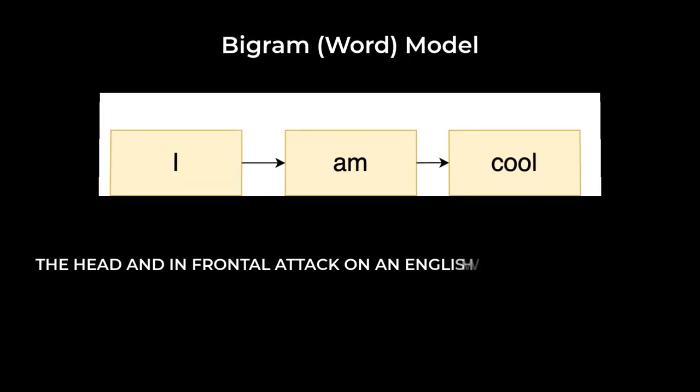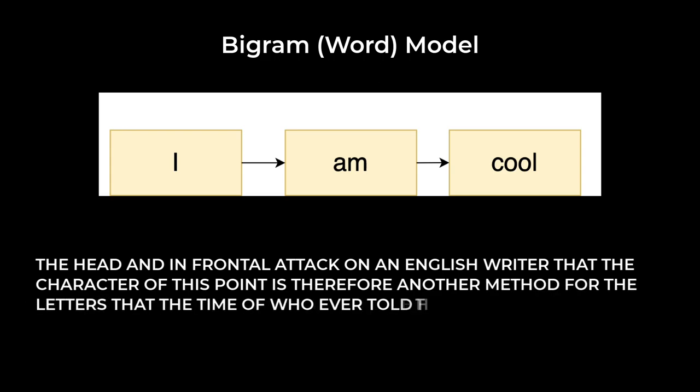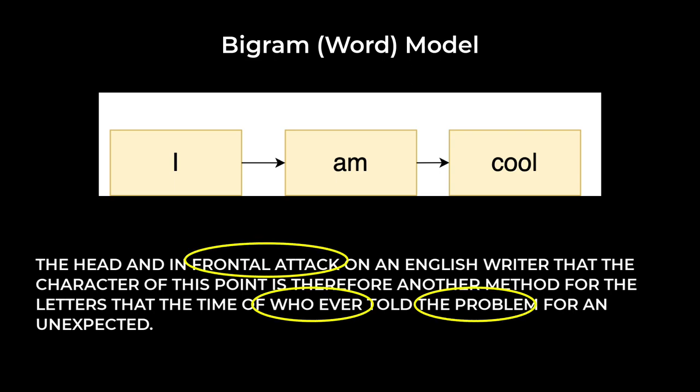In the bigram model case, we use 2 word probabilities to generate language. And you can see the generated words look even more sensical, especially every pair of subsequent words.